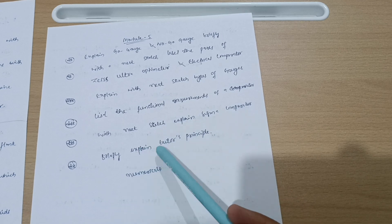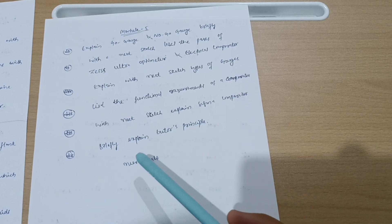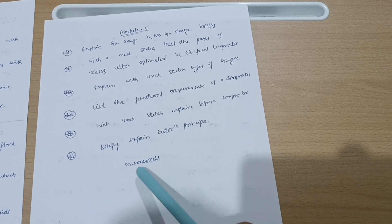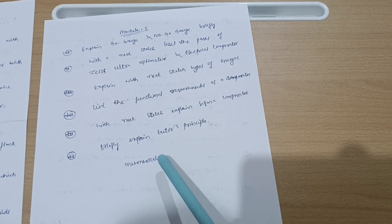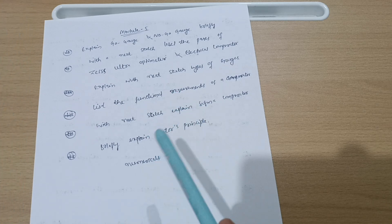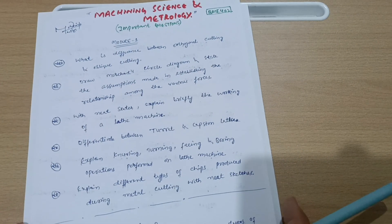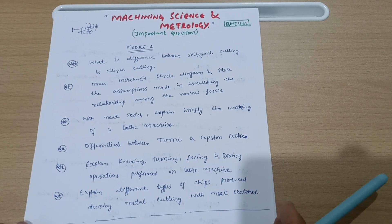With neat sketch, explain sigma comparator and briefly explain Taylor's principle. If you are convenient with the numerical part, then definitely go for numericals also. By this much content you can easily pass the subject and score also.